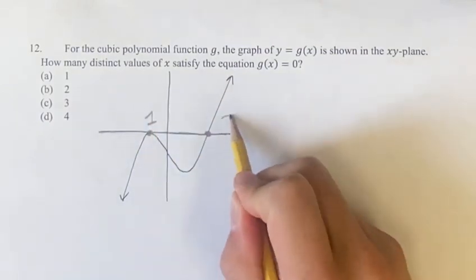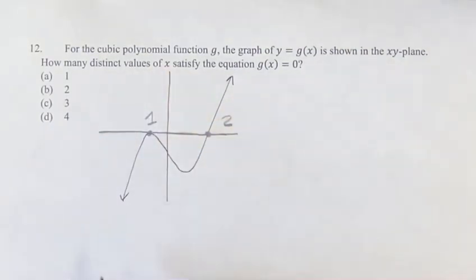So that gives us one, two distinct values of x that satisfy the equation, which means that our answer is just going to be two.